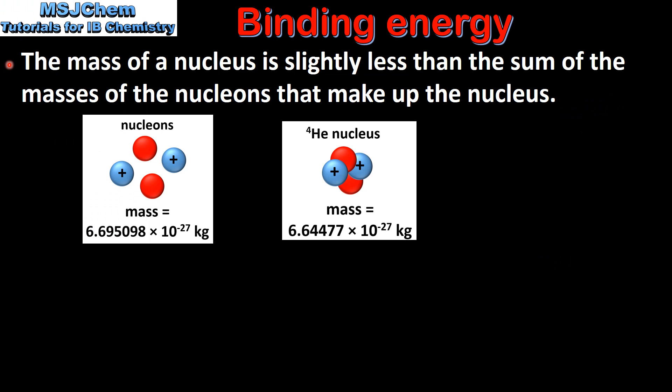In the previous video we saw that the mass of a nucleus is slightly less than the sum of the masses of the nucleons that make up the nucleus, which is known as the mass defect.